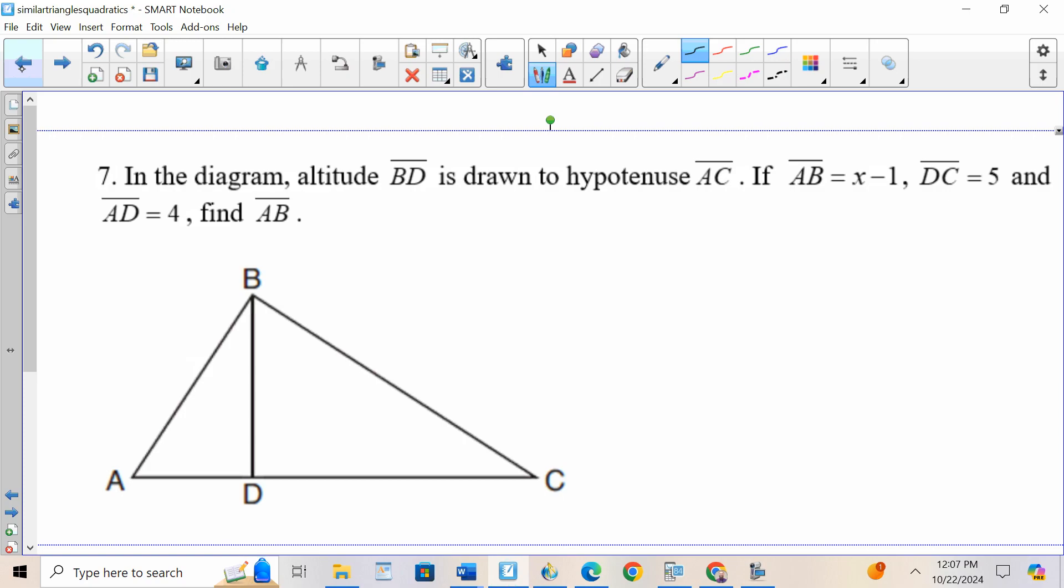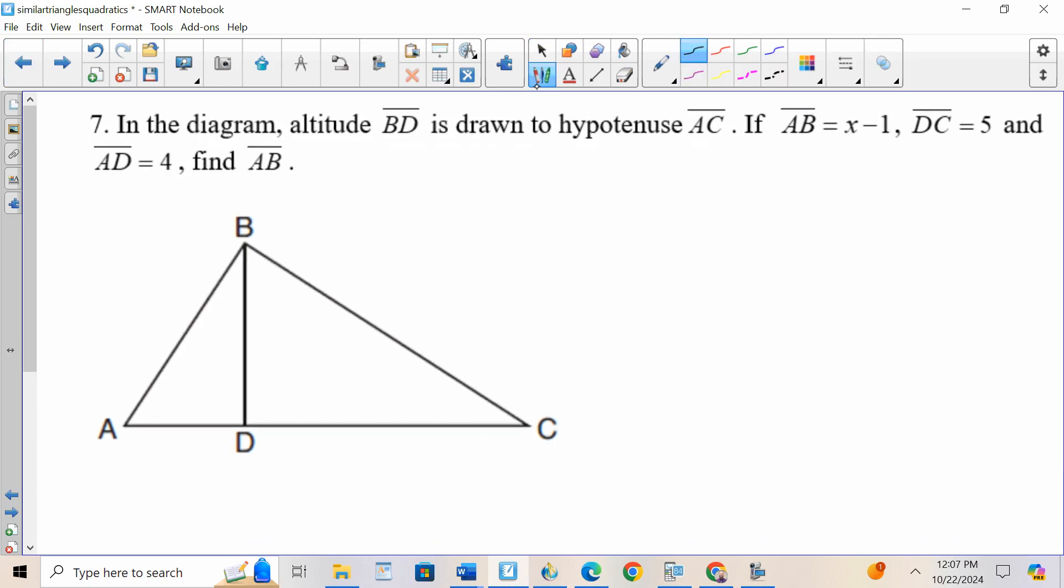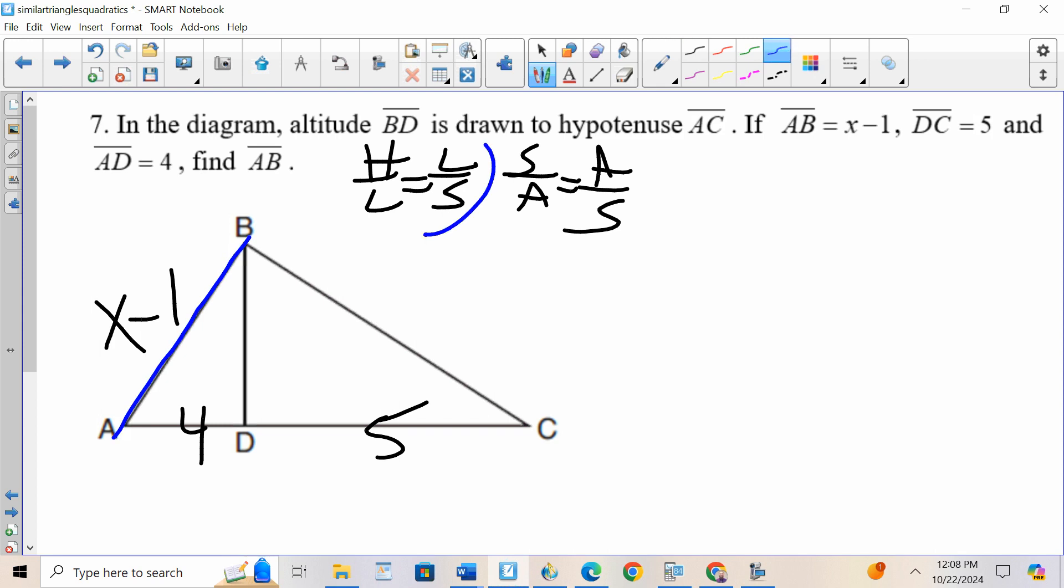Number 7. I see Hill Sass, let's put my information into the picture. AB is X minus 1, DC is 5, AD is 4. I know this picture is Hill Sass. To determine if it's Hills or Sass, is there an L involved or an A involved? There's an L involved, so I use Hills.